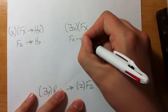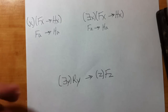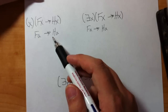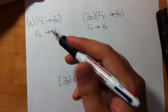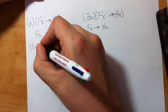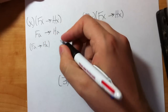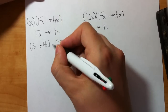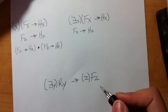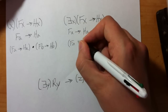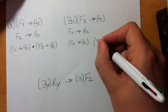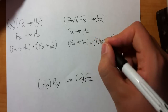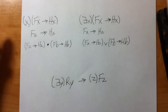For one element there's no difference between existential and universal. For a two-element expansion, you do an A version and a B version. So for a universal you get: FA arrow HA, then FB arrow HB, combined with a dot. For an existential it looks the same — FA arrow HA, then FB arrow HB — but combined with a wedge. For a three-element expansion you'd just tack on the C version.